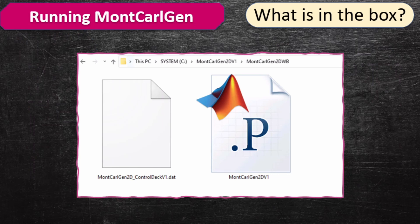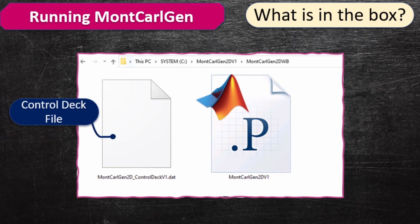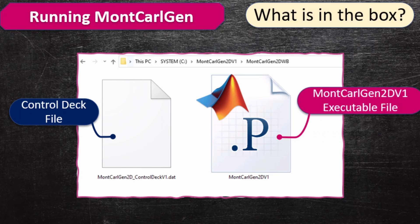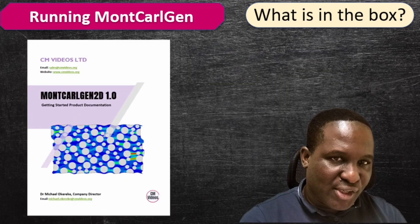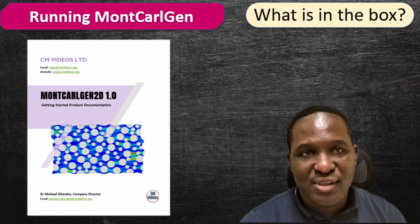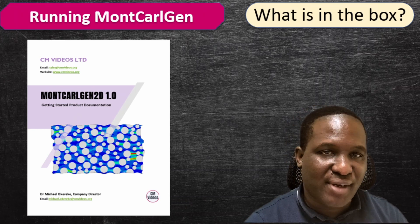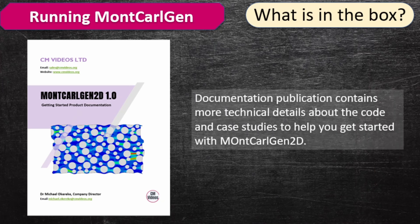If you look more into the workbench — the multi-calgen 2D workbench — two things are there, and this is what you'll be using most of the time to run your model. The first thing is the control deck file, where you control the behavior of multi-calgen. This is also where you specify the properties and the kind of simulation you want to run. And of course there's the main multi-calgen executable, which is the heart and engine of this code. There is also a documentation file I've provided — please look at it if you want to learn more about the technical details behind the code design, how the code runs, and further case studies.